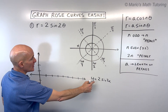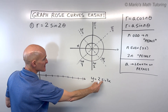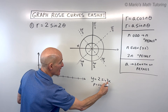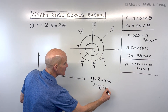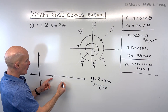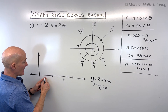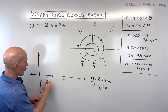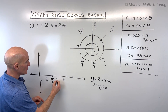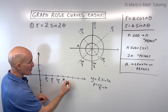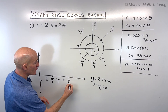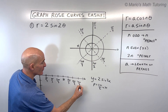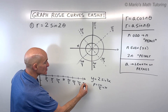We know the amplitude is 2, it's a sine graph, and the period is equal to 2π divided by the b value, which gives us a period of π. I like to divide the period into four equal pieces, so that gives us π/4, π/2, 3π/4, and continuing: 5π/4, 6π/4 which is 3π/2, 7π/4, and 8π/4 which is 2π.